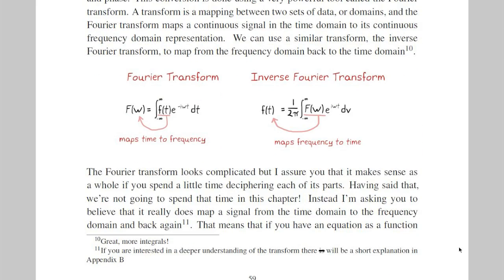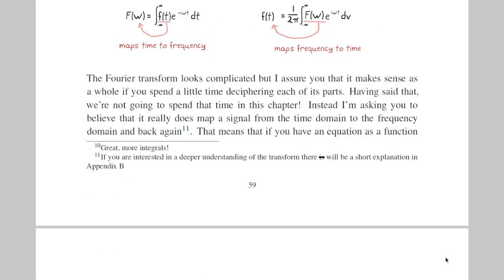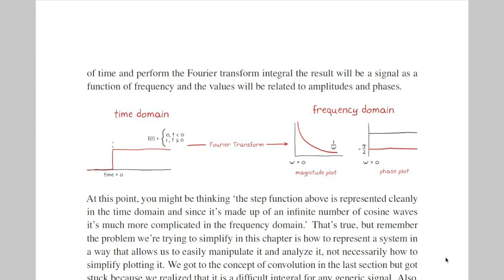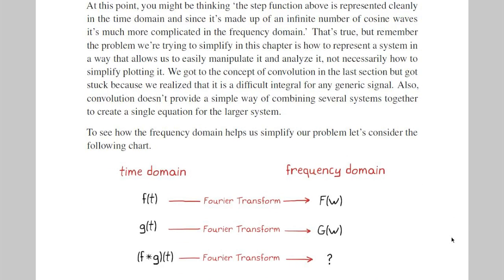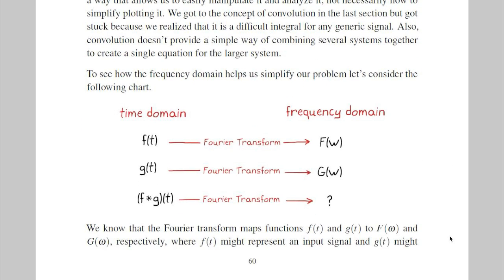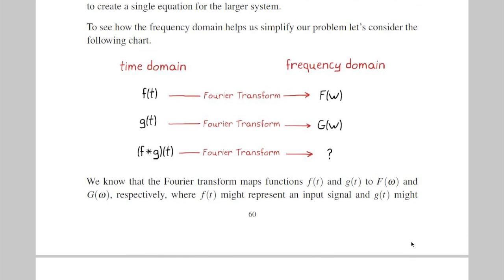Now, I don't go into detail about the Fourier transform in this section, but I'm working on an appendix that will give you a deeper understanding of the function. For now, we're just going to accept the Fourier transform as is and use it to prove something remarkable: that the Fourier transform of the convolution integral is just multiplication of the individual transforms. Or, a simpler way of putting it, convolution in the time domain is multiplication in the frequency domain.